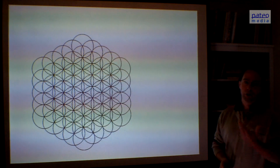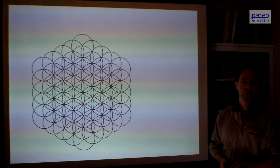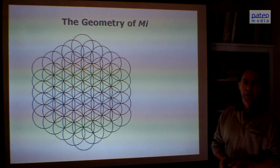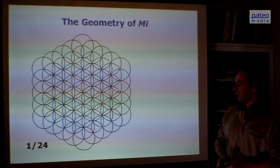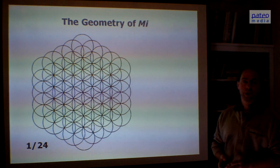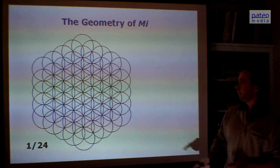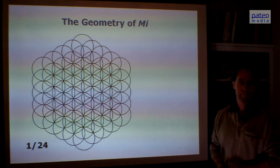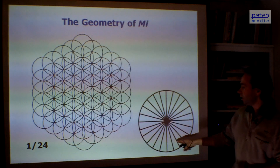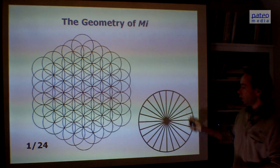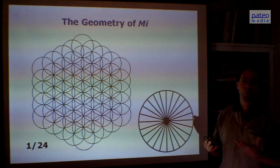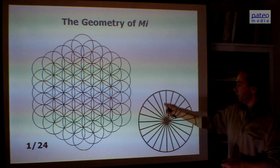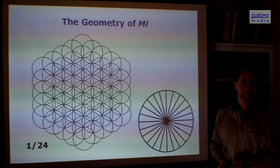Now we continue — I will not continue with all the circles because that will take too long. But now we arrive at the level of Mi. There is a new outer ring, and that outer ring has exactly 24 circles. This is the symbol I use to represent the whole of 24. We don't have a word for that, but it's the whole of 24 — 24 slices in a circle.